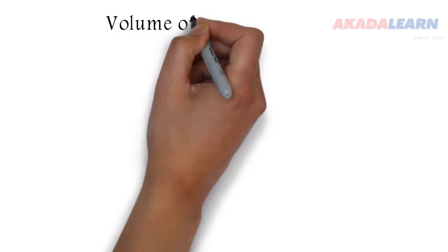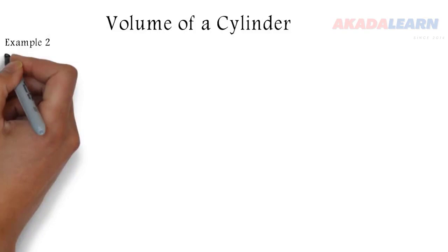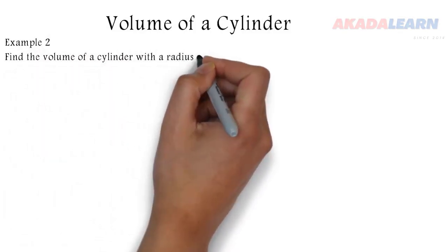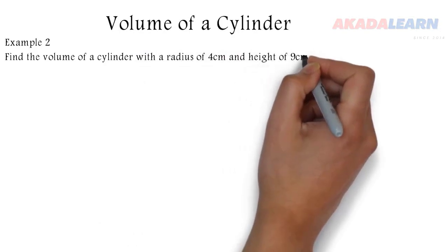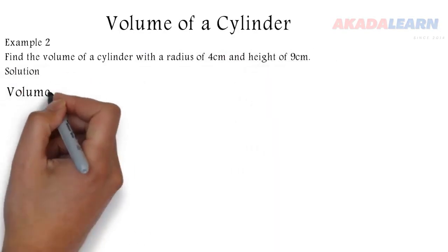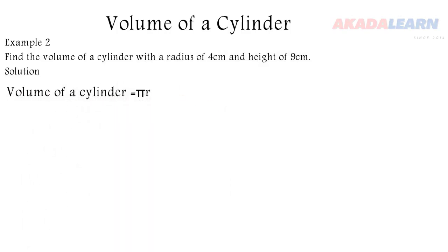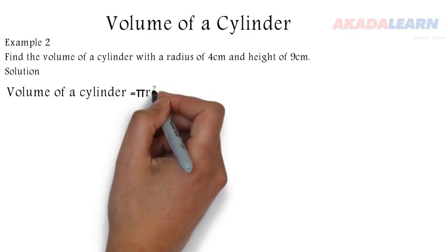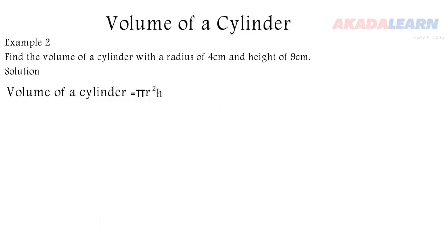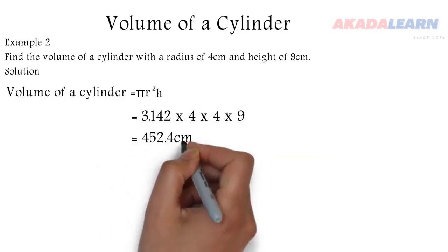Now we see volume of a cylinder. First, let's see the formula with an example. Find the volume of a cylinder with a radius of 4 centimeters and height of 9 centimeters. Volume of a cylinder is given by πr²h, so substituting: 3.142 × 4 × 4 × 9, and we get our volume in centimeters cubed.